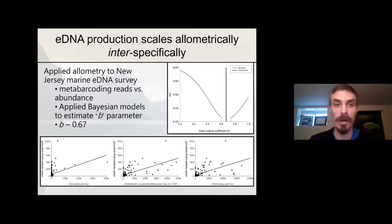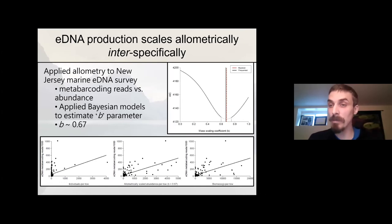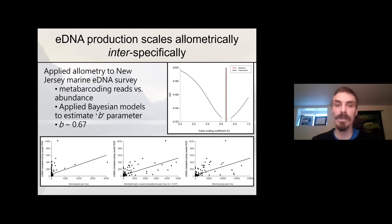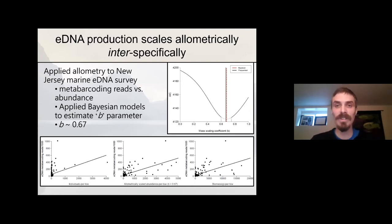To test this hypothesis, we went out and analyzed a previously published dataset. We applied our allometric framework to a New Jersey marine eDNA survey, which basically compared the number of metabarcoding reads assigned to each species from eDNA samples versus their abundance assessed from traditional trawling data. We used Bayesian models to estimate the value of the B parameter. We ended up finding that our point estimate for the value of the allometric scaling coefficient was 0.67 — very close to what you would expect based on theory.